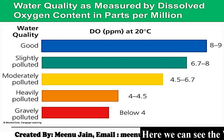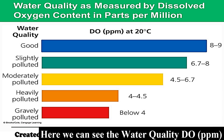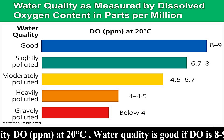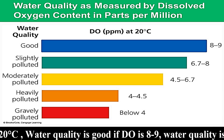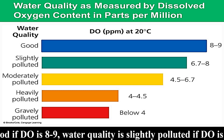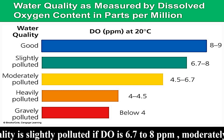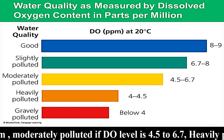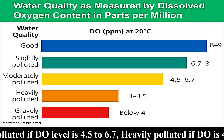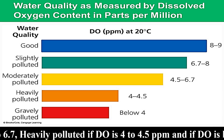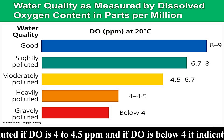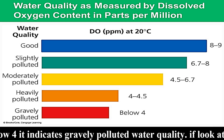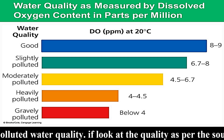Here we can see the water quality as measured by dissolved oxygen content in parts per million (ppm) or mg per liter at 20 degrees centigrade. Water quality is good if dissolved oxygen is 8–9 ppm; slightly polluted if 6.7 to 8 ppm; moderately polluted if 4.5 to 6.7 ppm; heavily polluted if 4 to 4.5 ppm; and if dissolved oxygen is below 4, it indicates gravely polluted water quality.